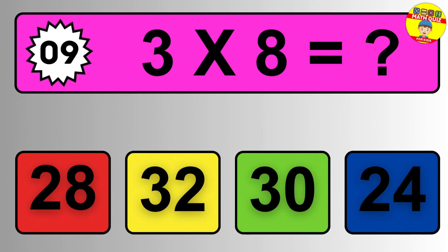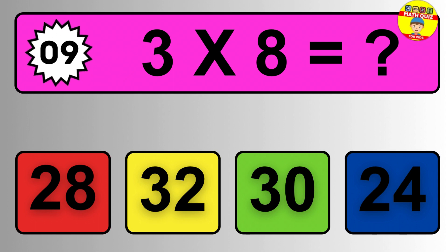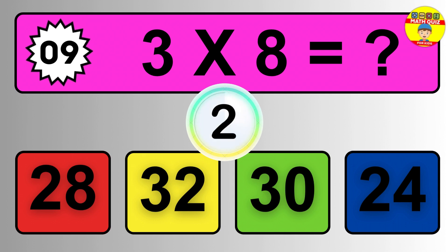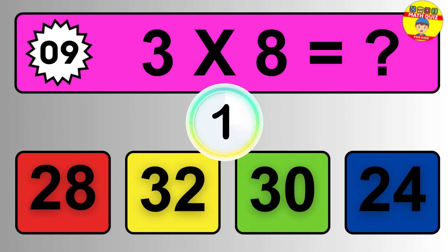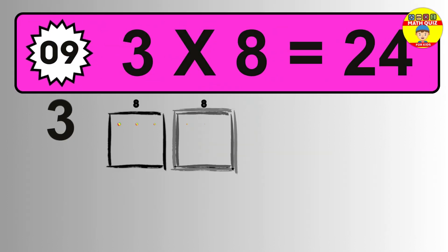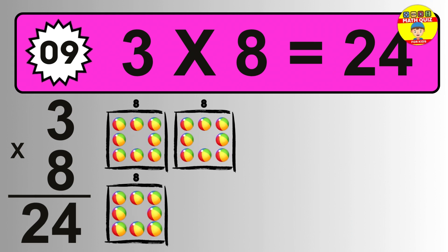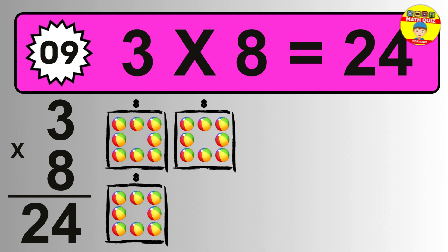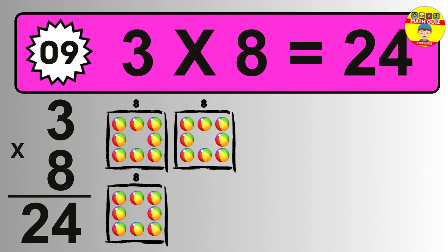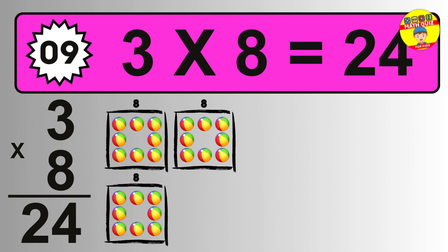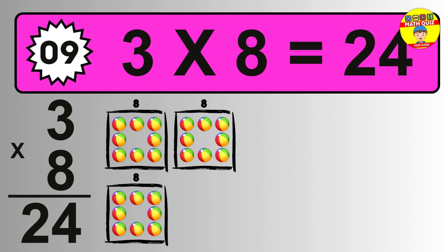Question nine: three times eight equals what? The answer is three times eight is twenty-four. To calculate, we have three groups with eight balls each. So how many balls do we have? Twenty-four balls.